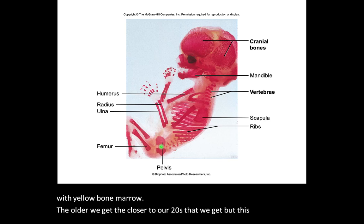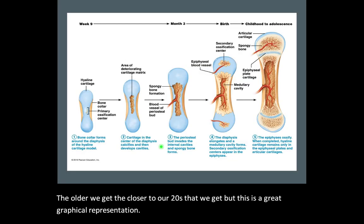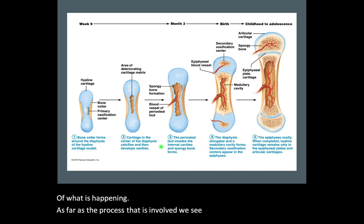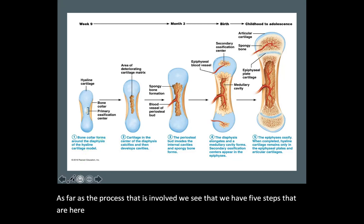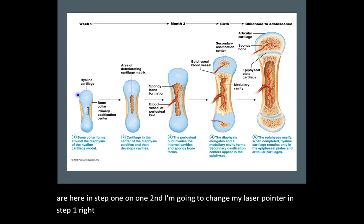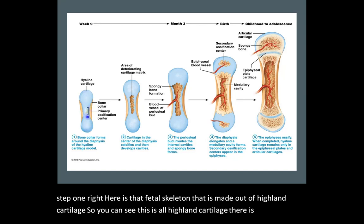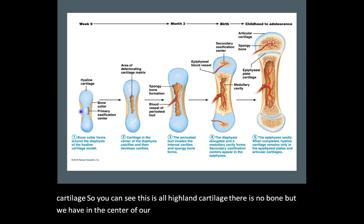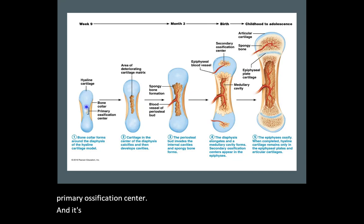This is a great graphical representation of what is happening. As far as the process involved, we see five steps. In step one, here is that fetal skeleton made out of hyaline cartilage — there is no bone yet. In the center of our fetal bone we have what we define as the primary ossification center, and it's within this ossification center where osteoclasts begin to break down the hyaline cartilage.